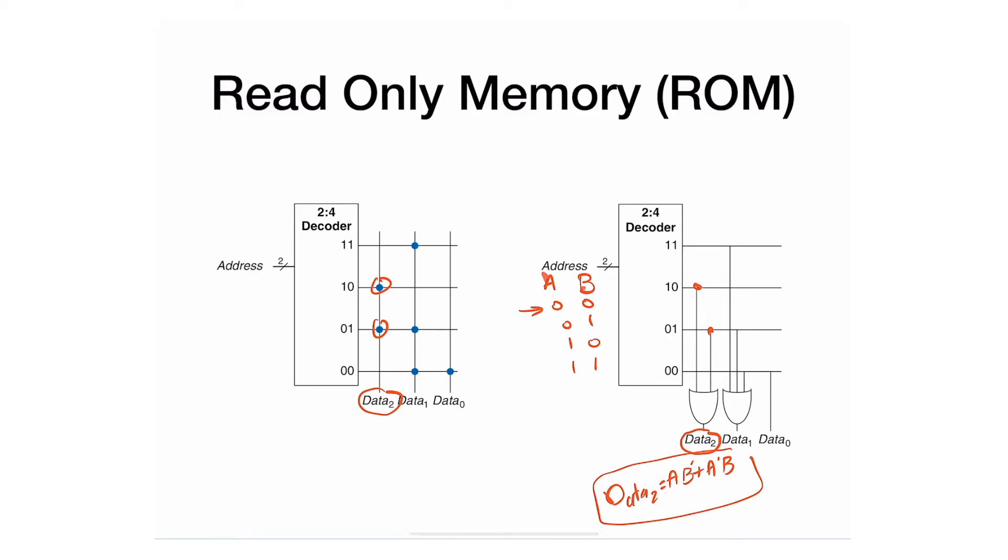You might wonder why implement a simple gate using ROM. The answer is: we have only two inputs, but you might have 1024 rows. This table becomes extremely large to track using gates. So you can store it in ROM. Basically, you put your ones and zeros in the first column—you'll have 1024 rows—and the output you need: one, zero, zero, one, whatever pattern you want.